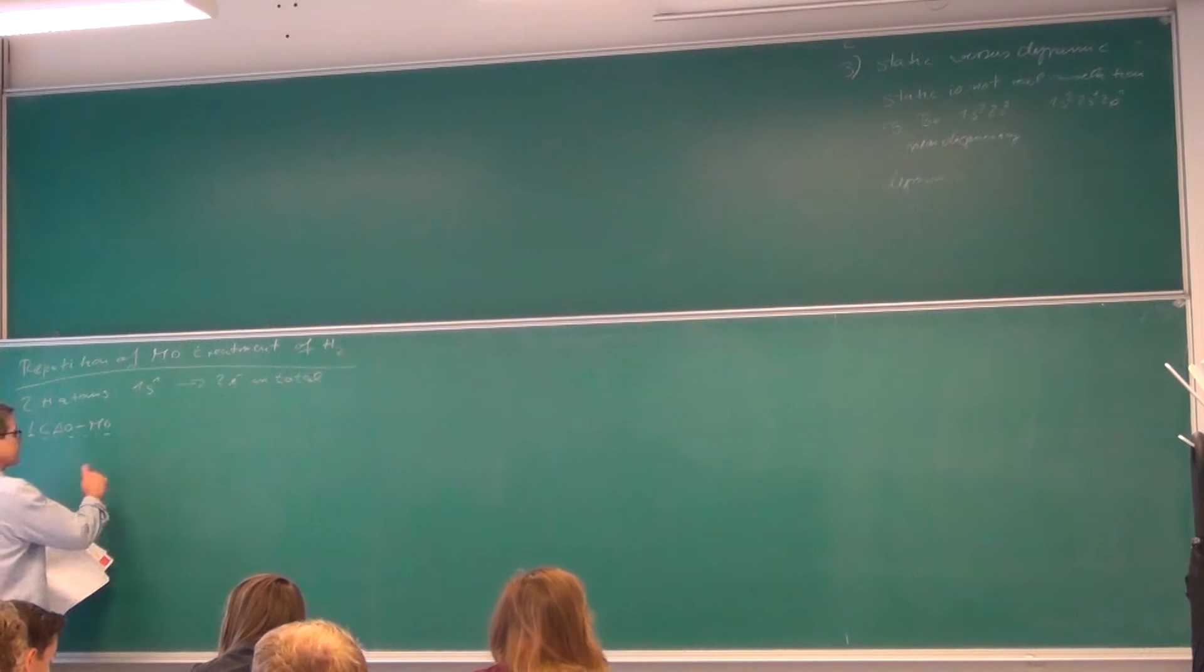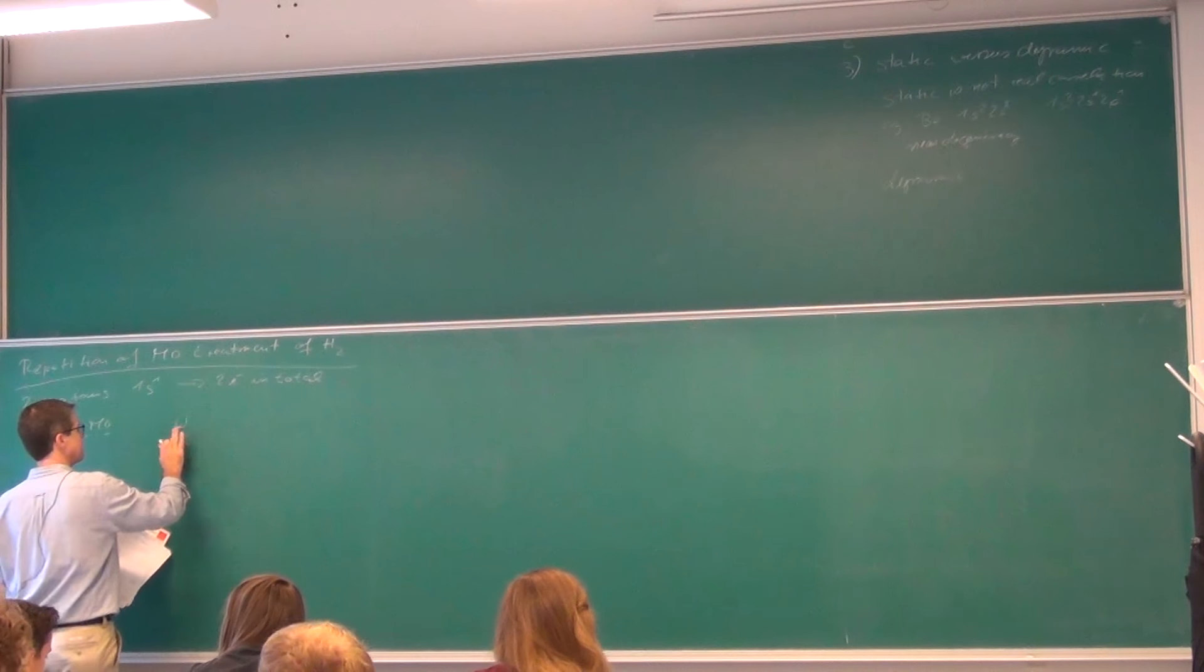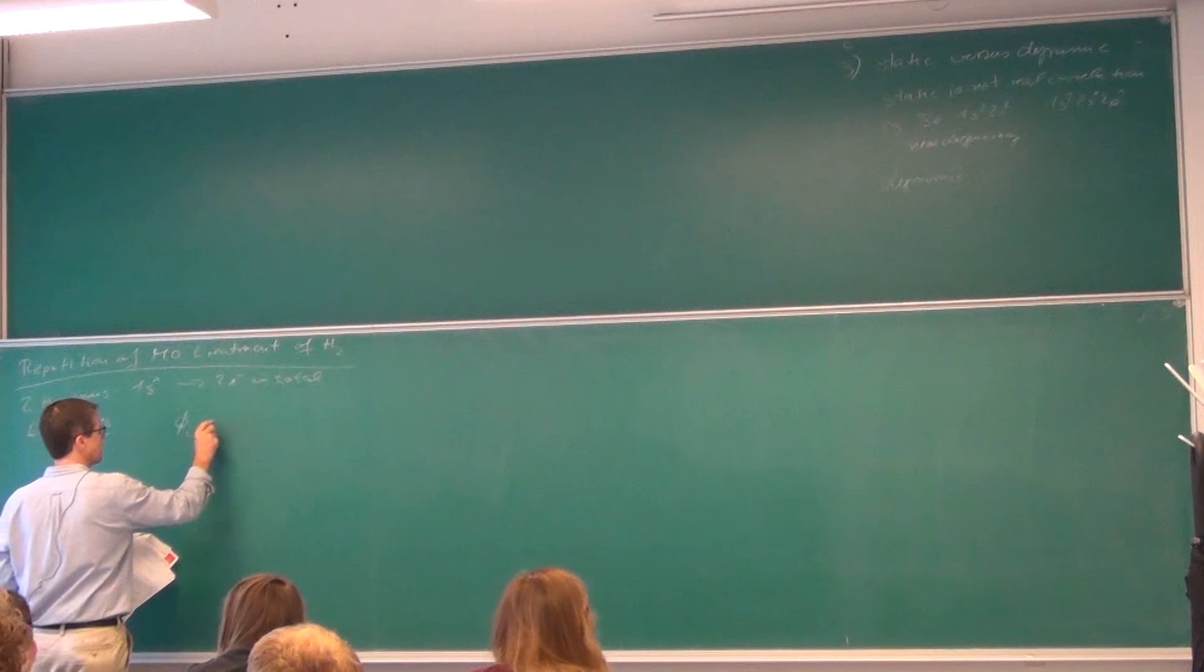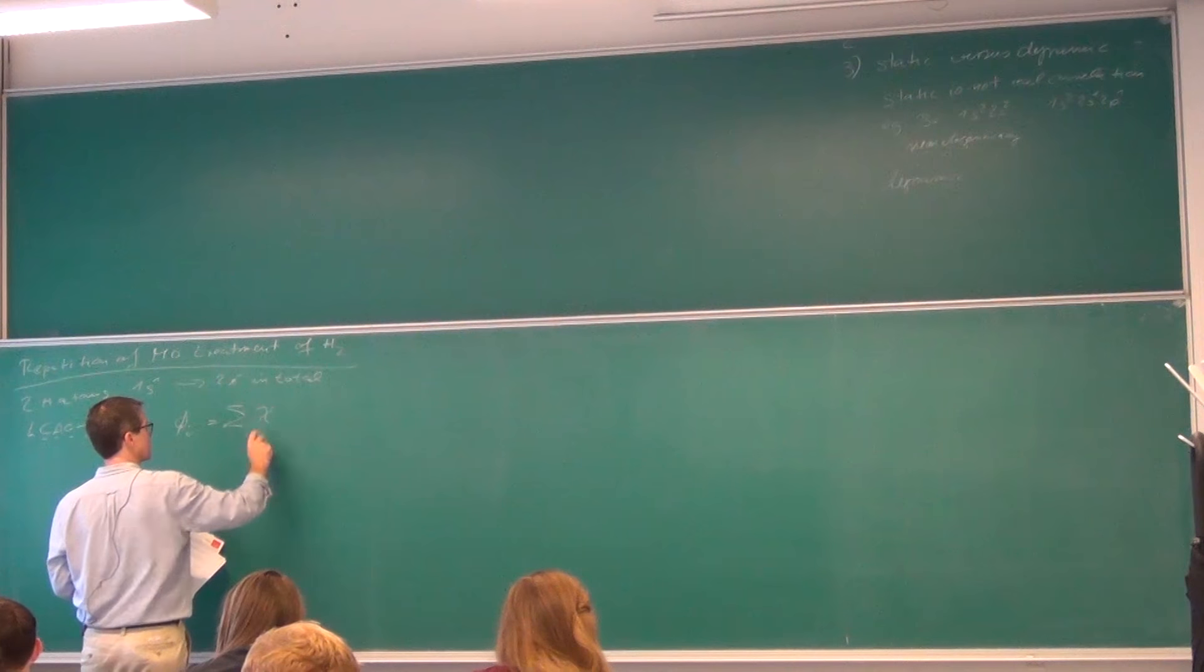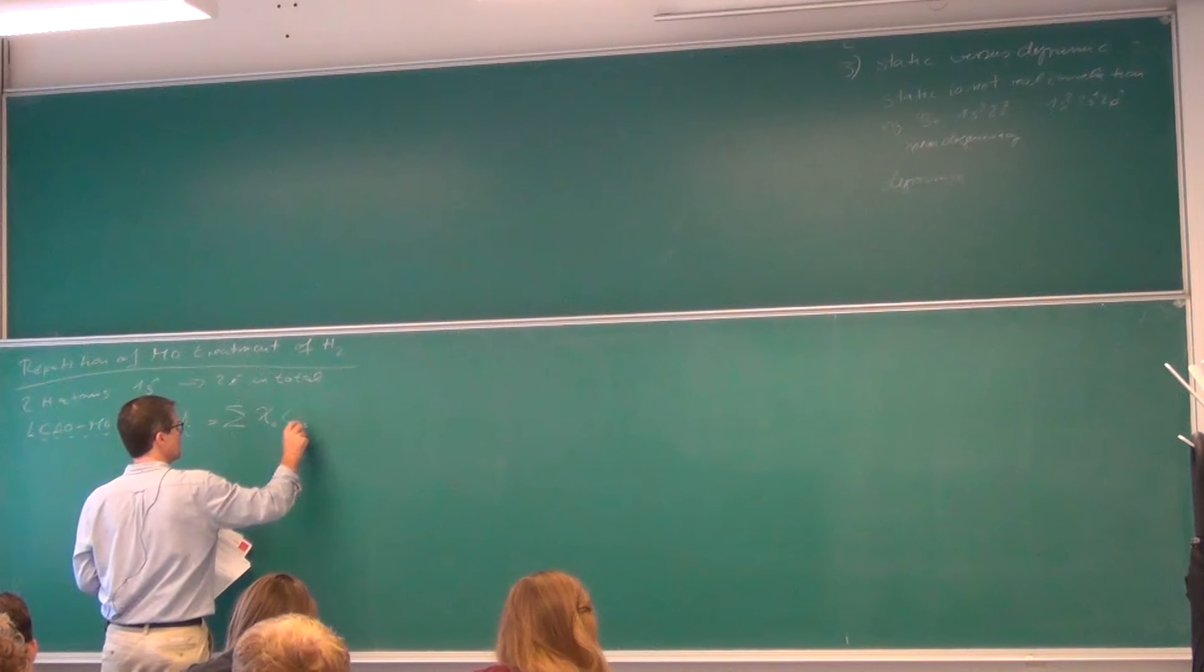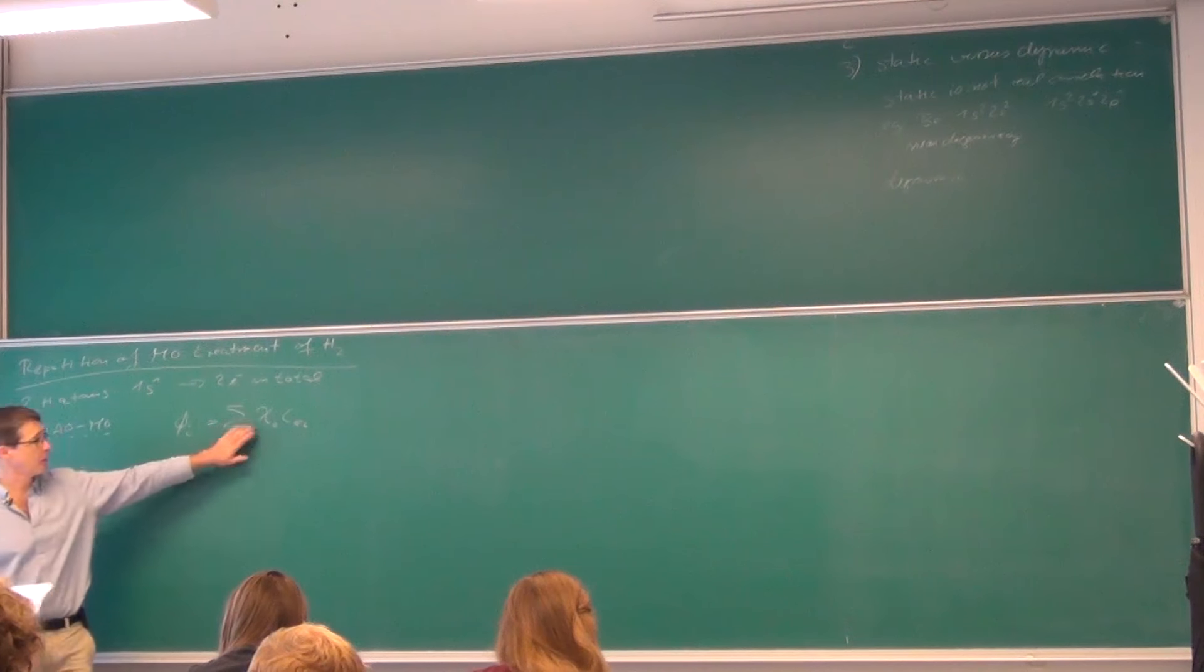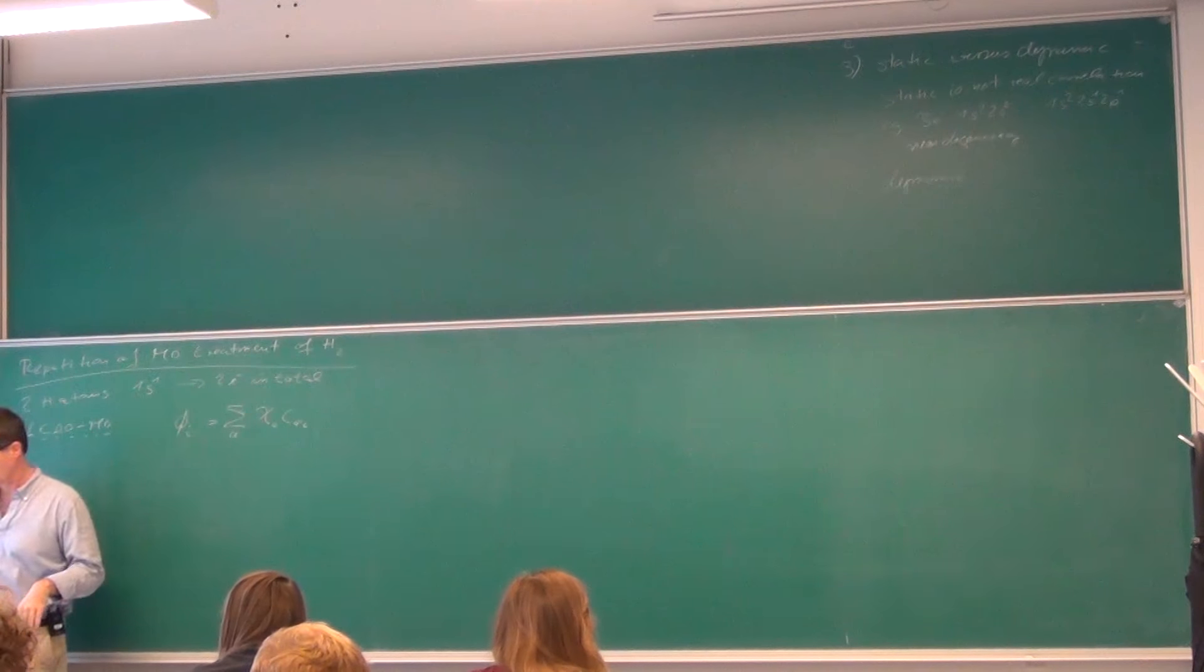In our case now, if I call the molecular orbitals phi, which means we make a linear combination of atomic orbitals, which I want to call chi, with some molecular orbital coefficients. That's the atomic orbitals, that's the molecular orbital coefficients, and that's our molecular orbitals.